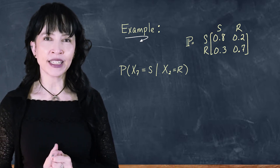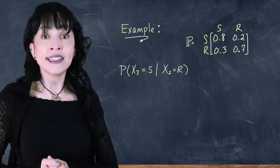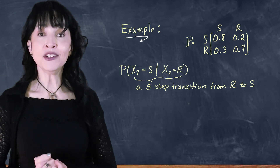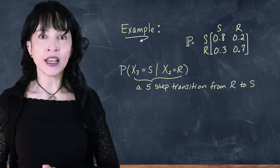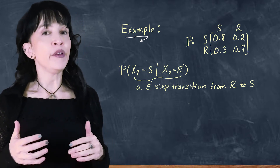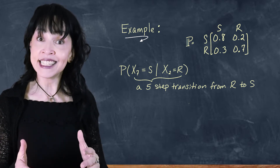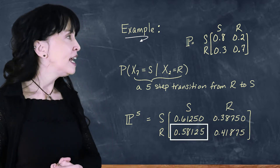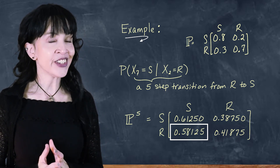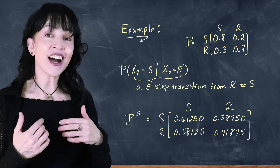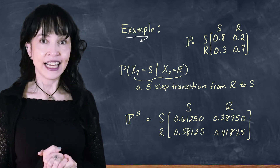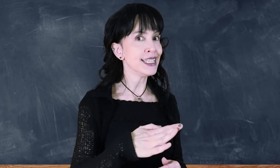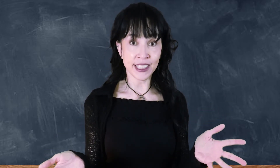As a quick example, let's revisit the oversimplified weather model from the previous video — sunny or rainy on any given day, following a Markov chain with a given transition matrix. If you want the probability that x7 is sunny given that x2 is rainy, that's five time steps, rainy to sunny. We need the five-step transition probability matrix, which is the original matrix to the fifth power. Pulling out the rainy-to-sunny entry gives approximately 0.58125 — much easier than conditioning on times three, four, five, and six. In our next video, we'll talk about absorbing states for a Markov chain. I will see you in the next one.